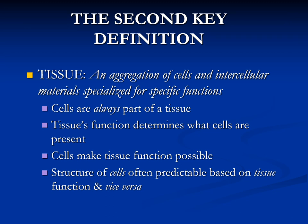The second key of definition is the tissue. Tissue is an aggregation of cells and intercellular material specialized for a specific function. Our body consists of four basic tissues: epithelium, connective, muscle, and nervous system. Cells will always be part of the tissue. Usually the tissue function determines what cells are present. For example, for tissue specialized for contraction, we need myofiber cells that contain actin and myosin, which are responsible for muscle contraction. For bone, we need osteocytes and osteoblasts, responsible for protection and mineralization of the matrix. So the cells make tissue function possible.